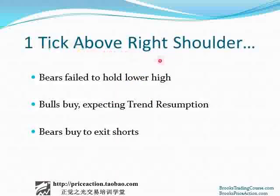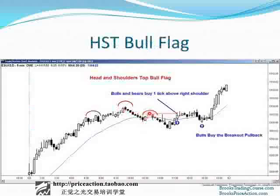What happens one tick above that right shoulder? The bears failed to keep forming lower highs and lower lows, so they're giving up on their premise of a bear channel. The bulls buy expecting the resumption of a trend, and the bears buy above that right shoulder to exit their shorts because they now believe their original assumption of a bear trend is wrong. Here's the head and shoulders top, here's the right shoulder — bears will get out above the shoulder, and bulls will get long above the shoulder because at that point the market is no longer forming lower highs and lower lows, so it's no longer a bear trend. The bears sold betting on a bear trend, and as soon as we get above that lower high it's no longer a bear trend, so the bears buy back their shorts and take the loss. Bulls see the same process and they assume the bull trend is resuming — buying here and certainly buying a higher low pullback. You can call this a small higher low major trend reversal.